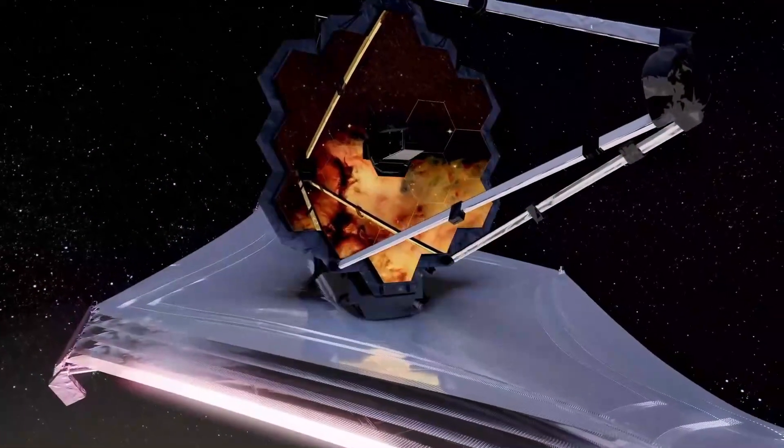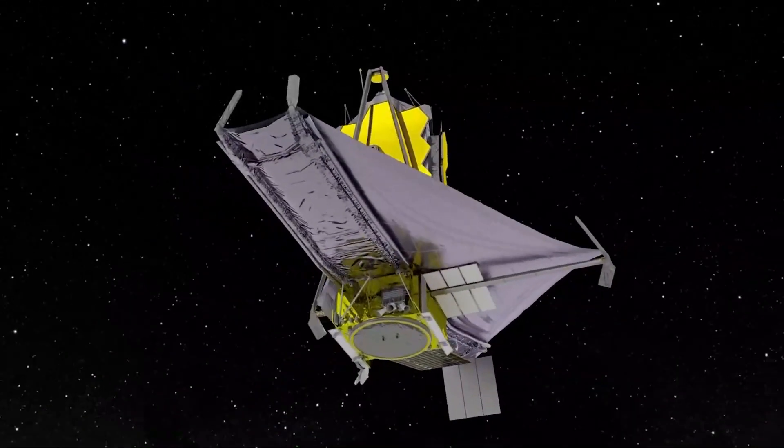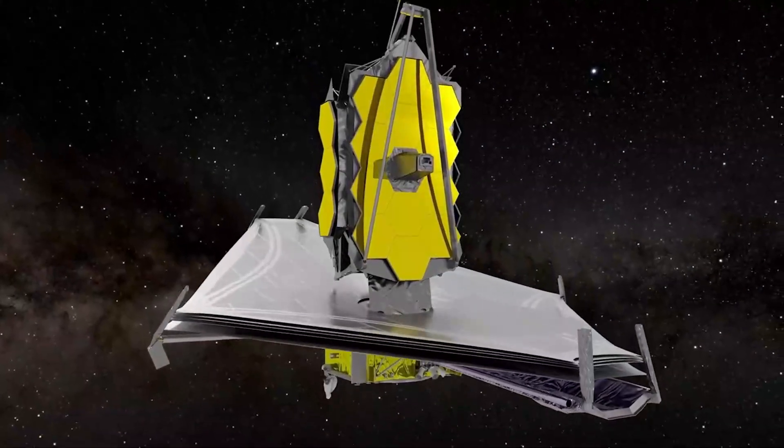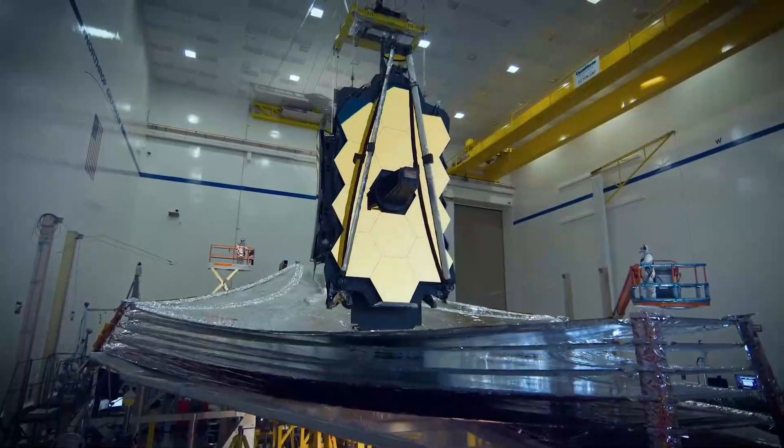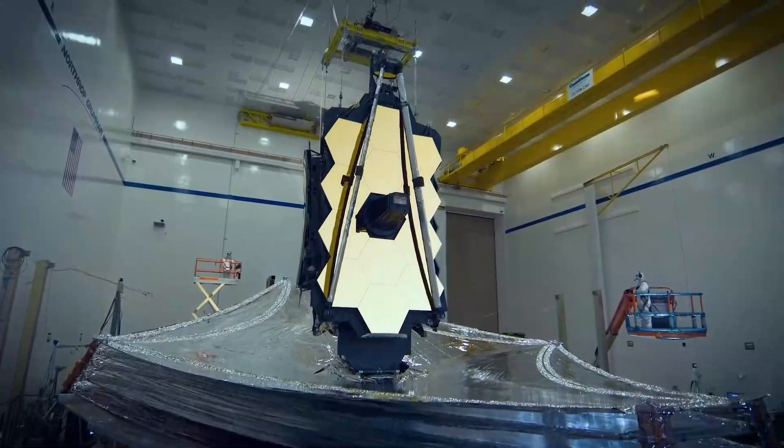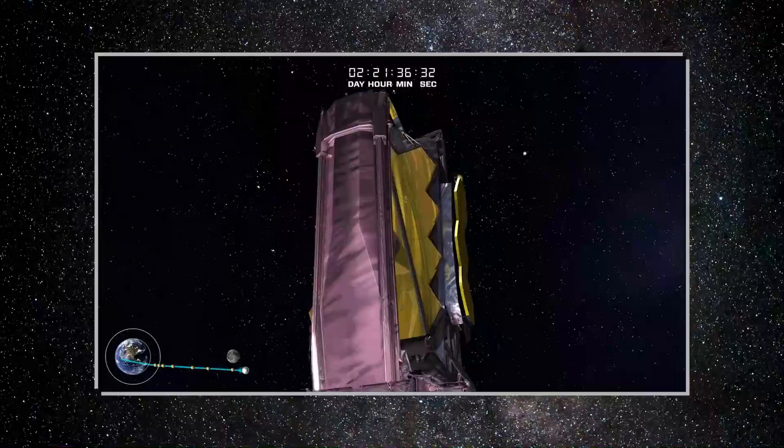After launch, the Webb glided away smoothly as seen on live footage from a camera attached to the rocket's upper stage, sparking yells and applauding from delighted mission-controlled engineers. Flight controllers verified that Webb's solar energy array was working as it was deployed. The Webb Telescope is now on its way to a million-kilometer distance from Earth.